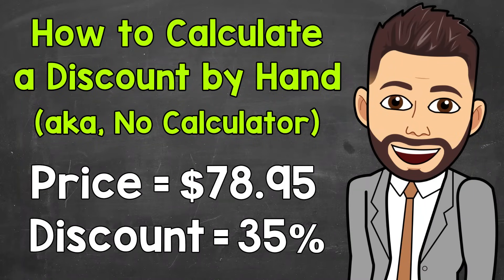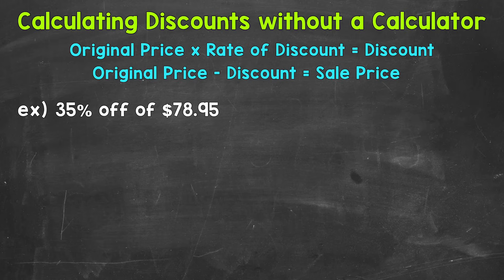Welcome to Math with Mr. J. In this video, I'm going to cover how to calculate a discount by hand — we are going to write everything out without using a calculator. This will show all of the steps for calculating a discount and then the final sale price based on that discount. Let's jump into our example where we have 35% off of $78.95.